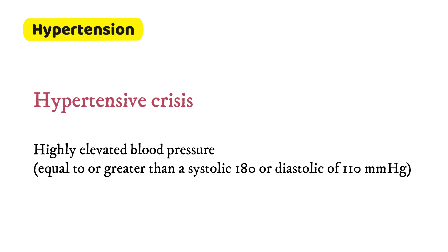Now we will discuss hypertensive crisis. Highly elevated blood pressure equal to or greater than a systolic of 180 or diastolic of 110 mmHg is called a hypertensive crisis. It is defined as a sudden severe increase in blood pressure.